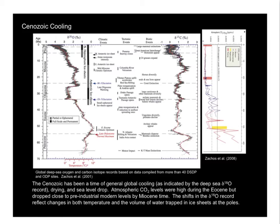After this, the Miocene is another time period of relatively warm conditions, though not as warm as the early Eocene. And after the Miocene, things gradually cool down until the present day, which is actually the coldest time of the entire Phanerozoic.